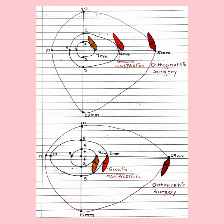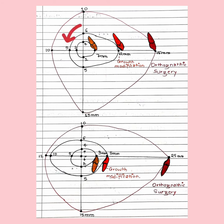In the maxilla, we take the premaxilla backwards by osteotomy technique — there is more potential for retraction than protraction. 7 mm of overjet or retraction was brought about by orthodontic tooth movement alone, whereas only 2 mm of protraction is possible by orthodontic tooth movement alone. 12 mm of retraction was brought about by growth modification, whereas only 5 mm of protraction is possible by growth modification.